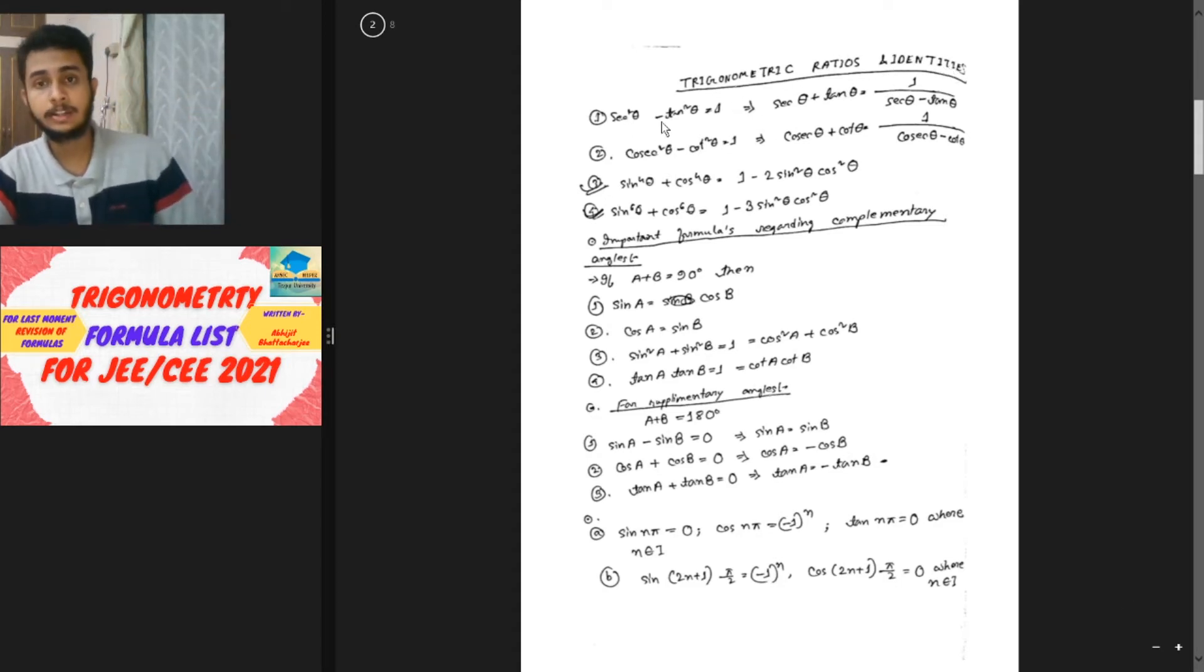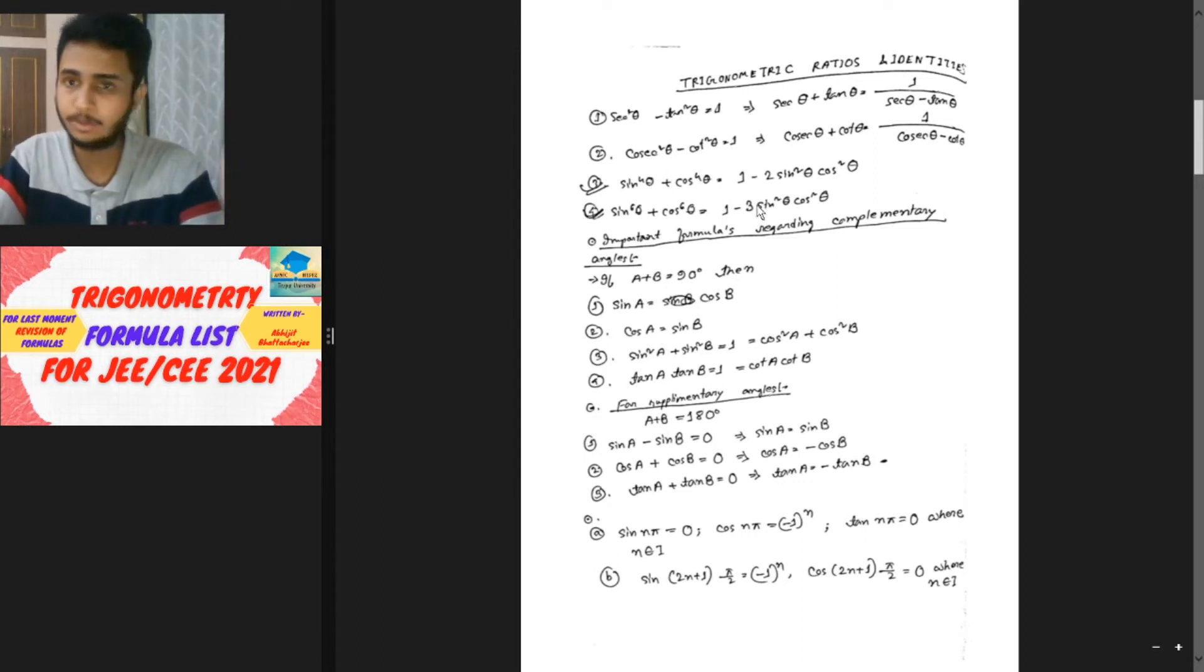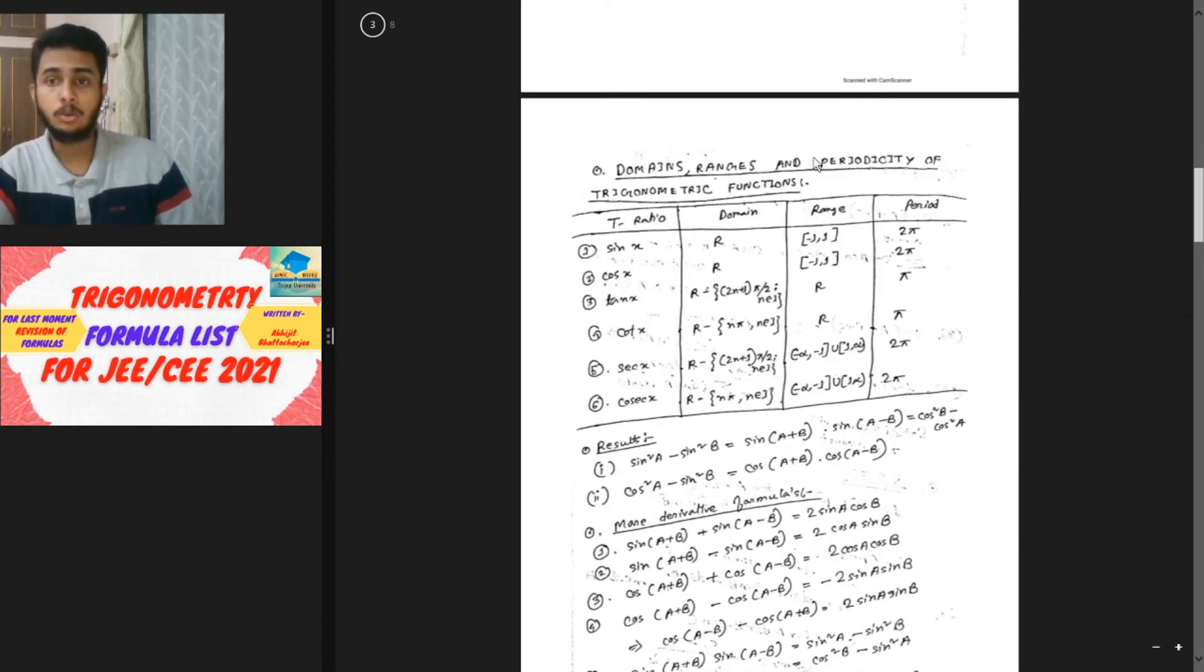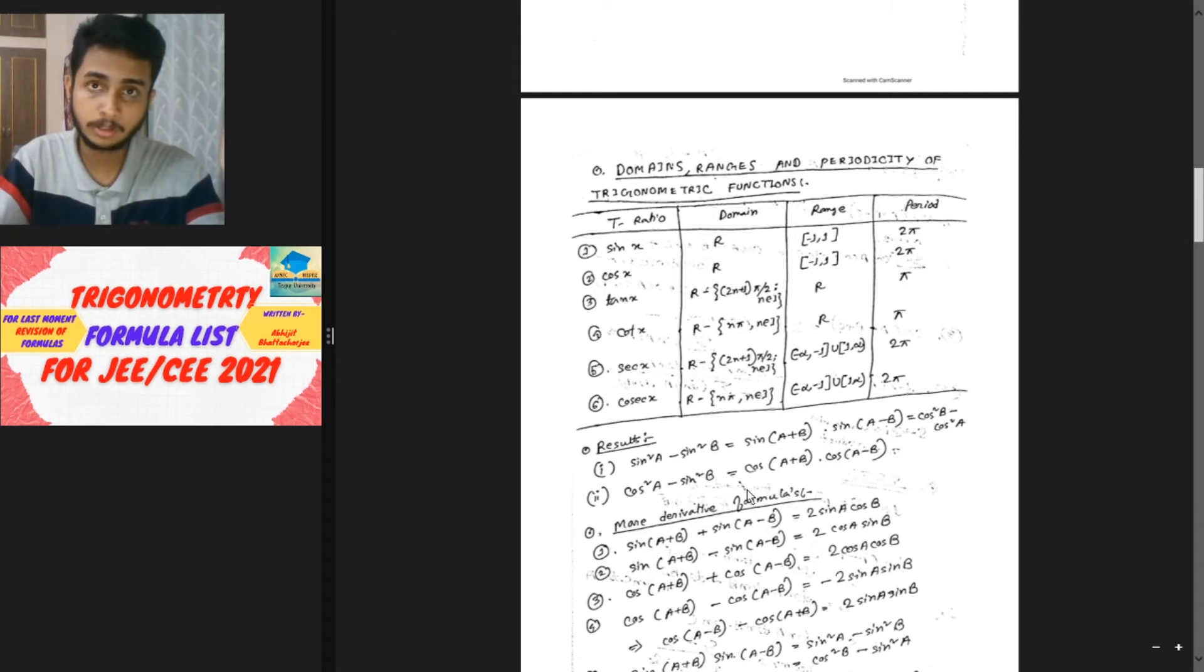The most important result is sin²θ plus cos²θ equals one. There are other domain and range type formulas, and sec²θ equals one plus tan²θ. These results are important for derivative formulas.